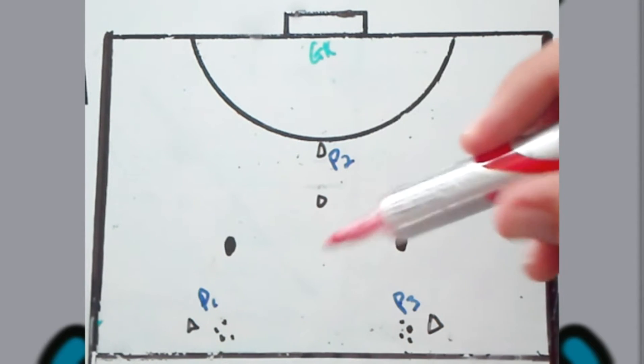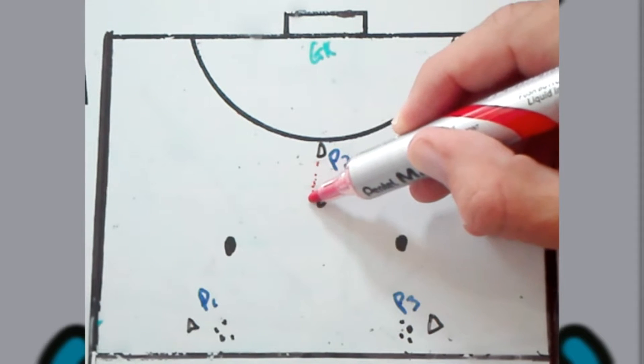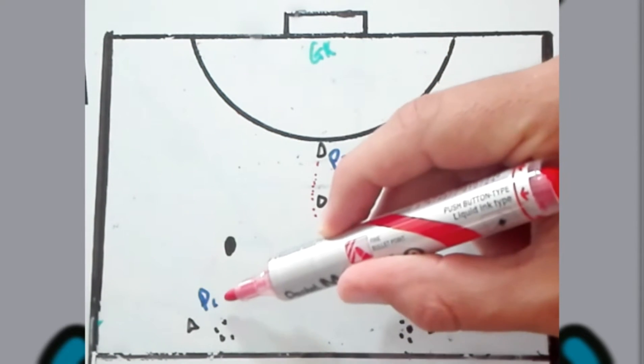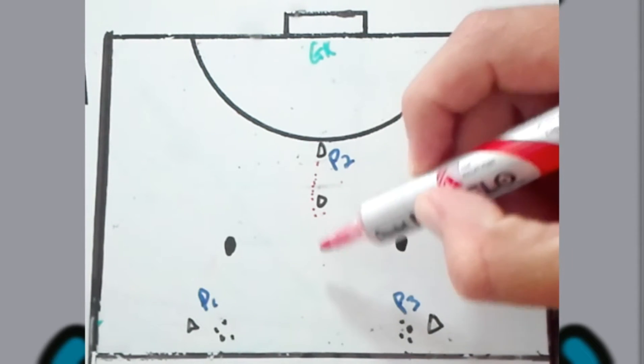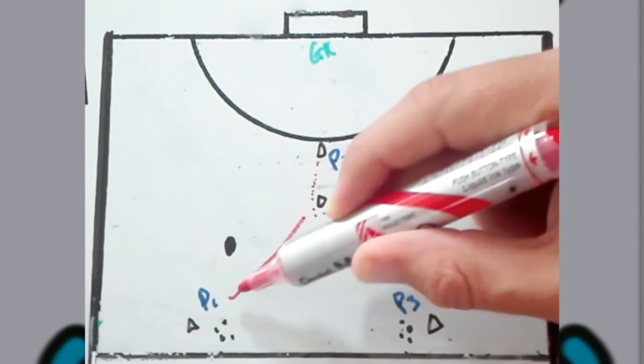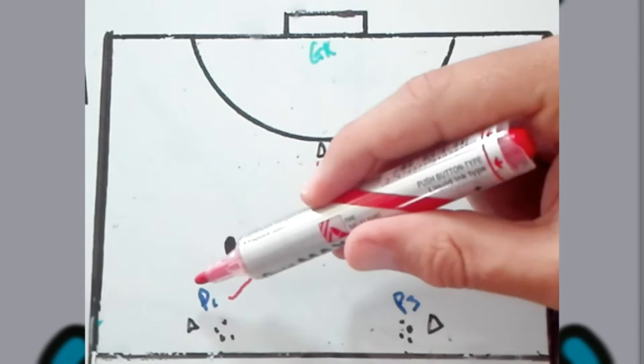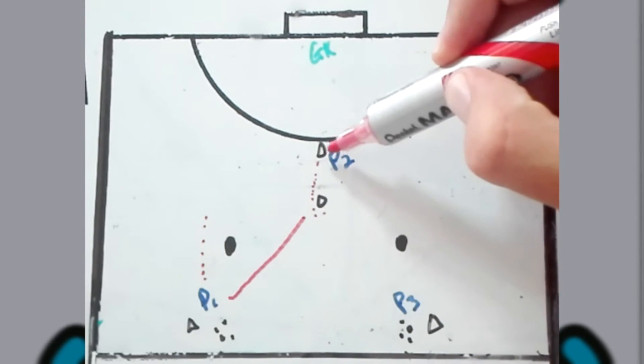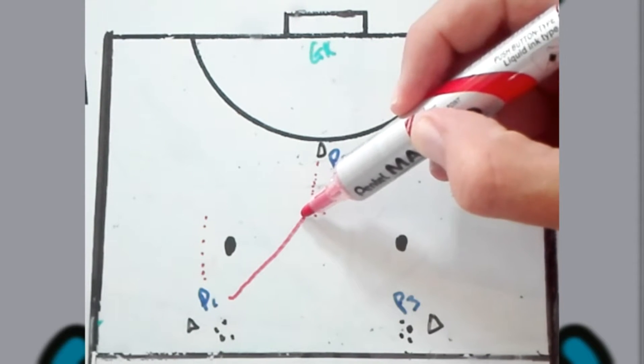How it works is player two will start making a lead towards this cone. As soon as player two makes the lead, player one will pass them the ball. But as soon as they pass the ball, they need to start making a lead because player two needs to bounce pass.